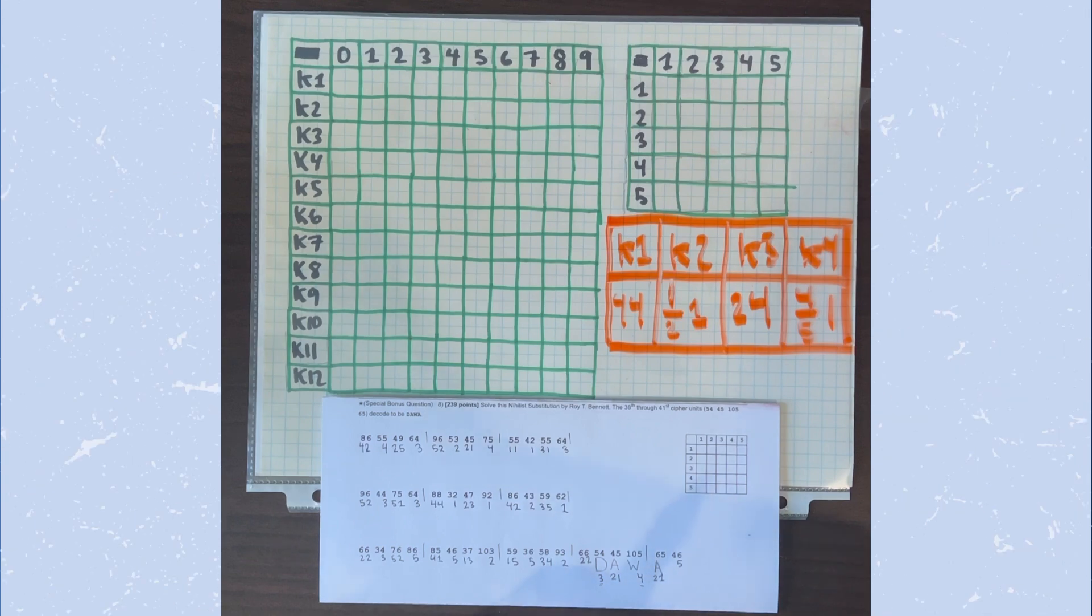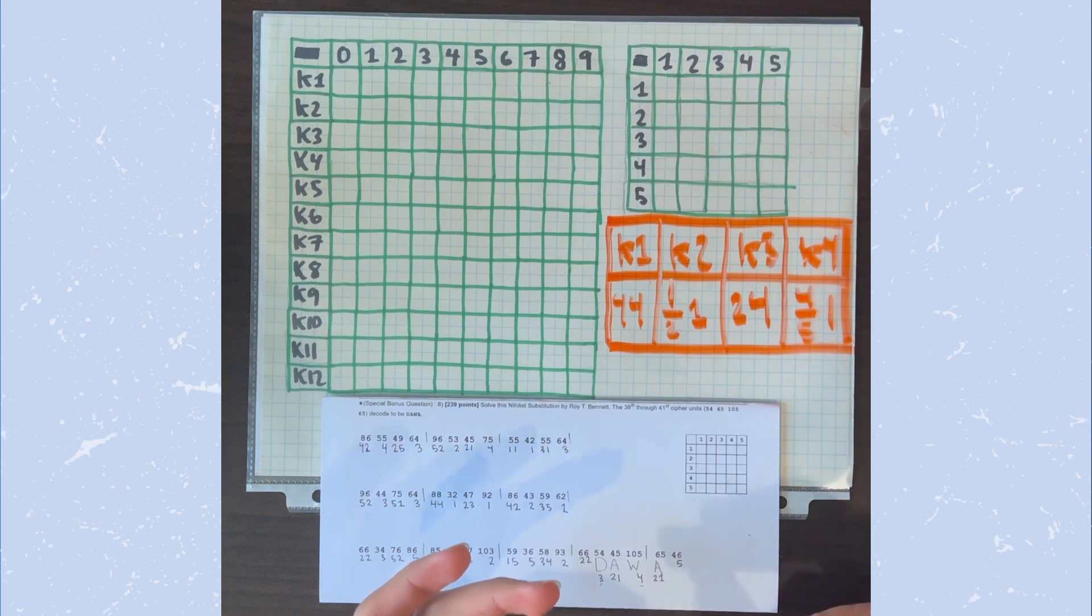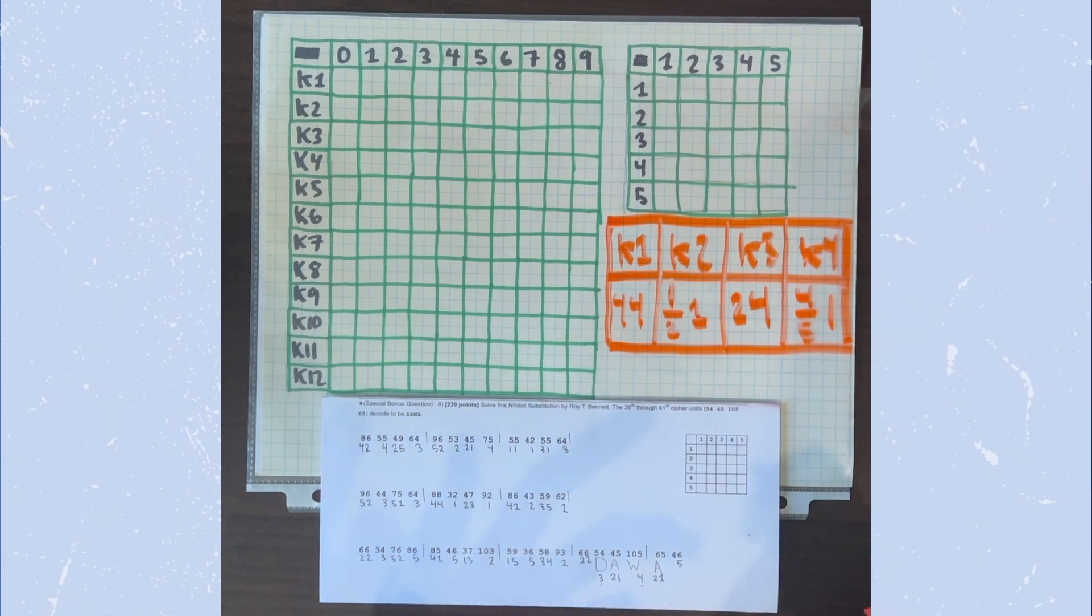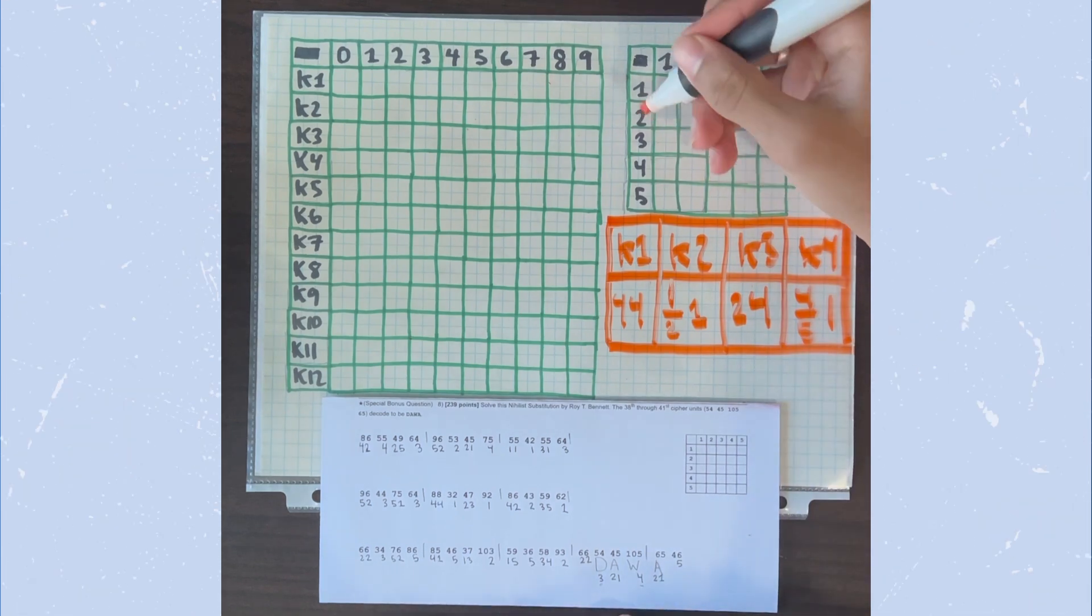Alright, so now that we subtracted our keyword numbers from our Cipher text, this is what we have left. We can start filling out our Polybius table and see that A is equal to 21. So let's go fill that out. We have A is 21, so we can put A right here.